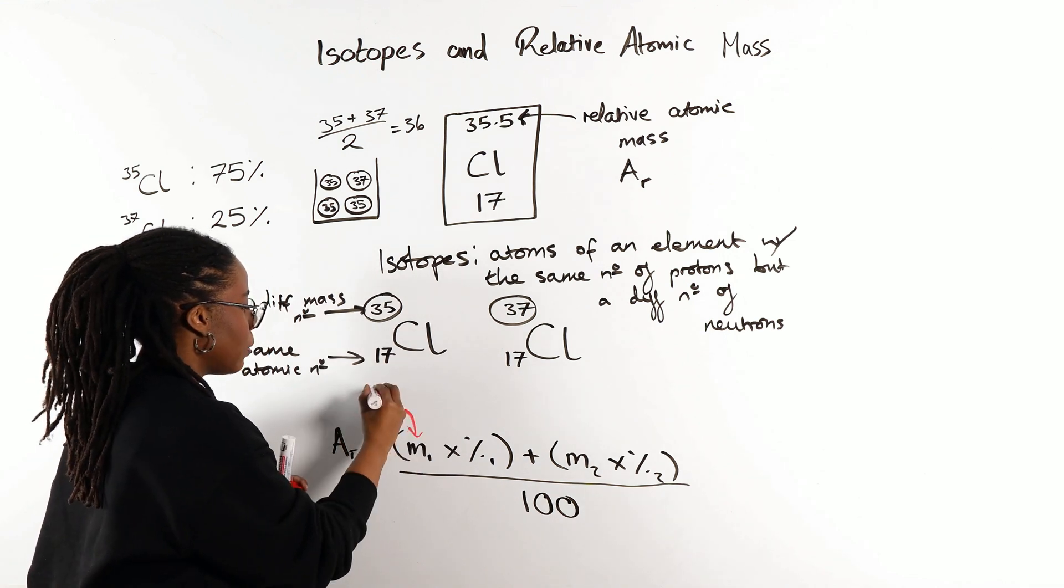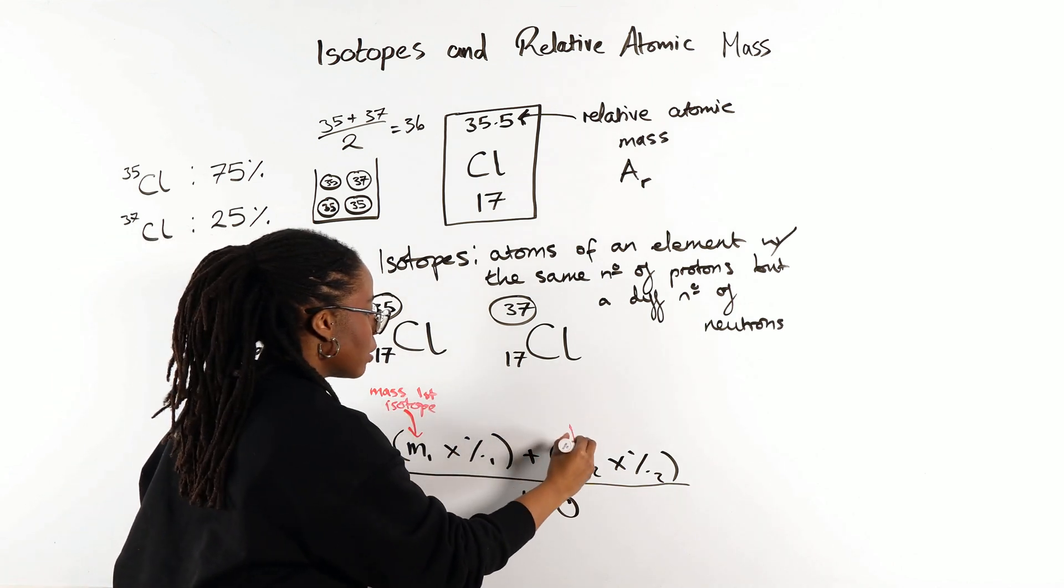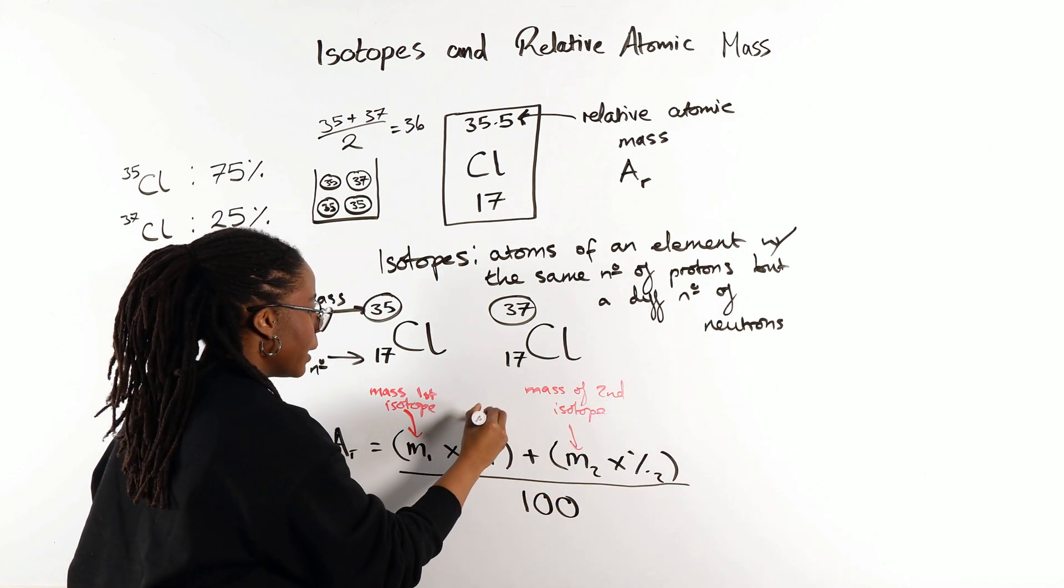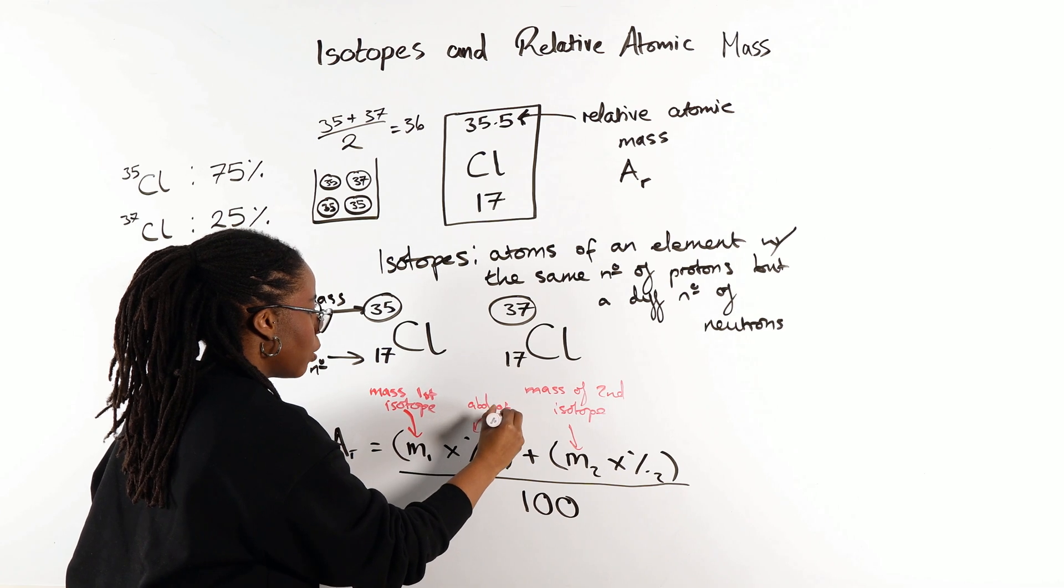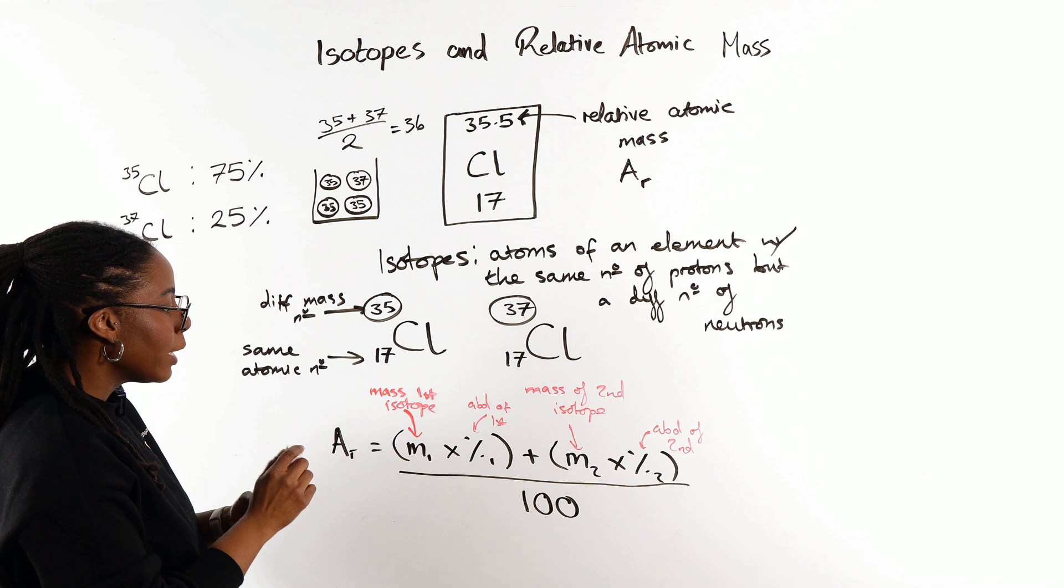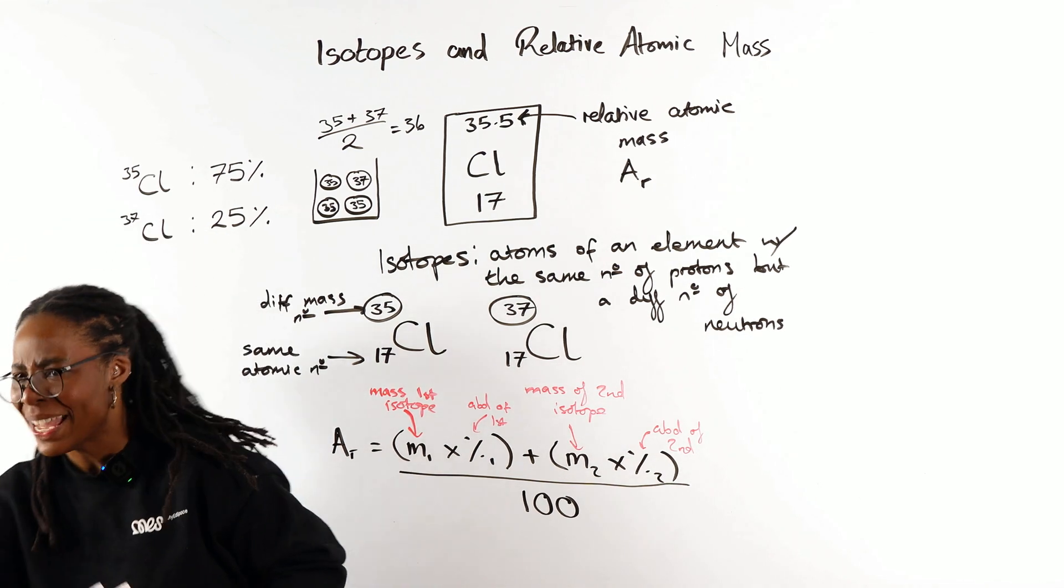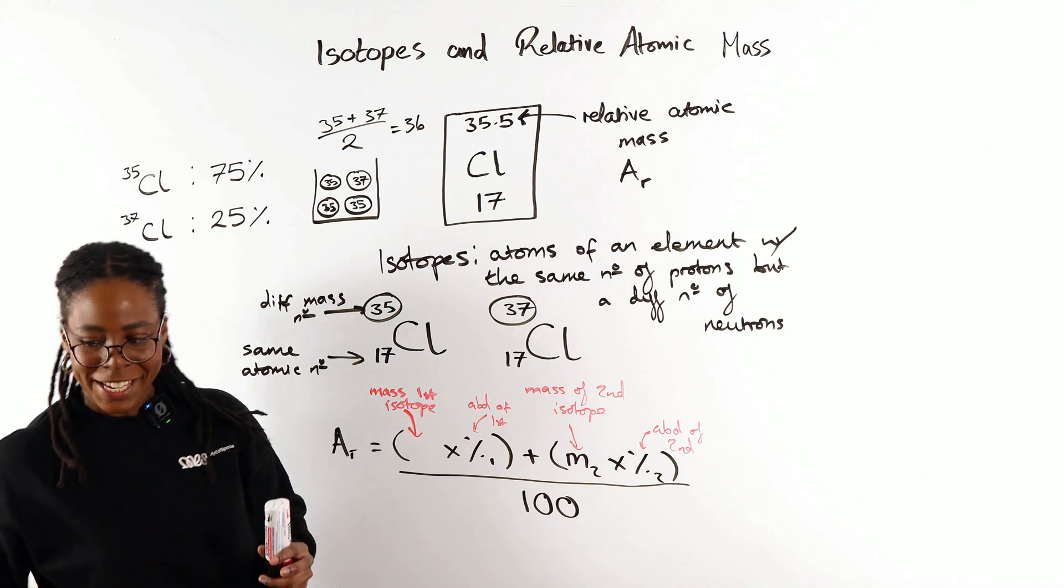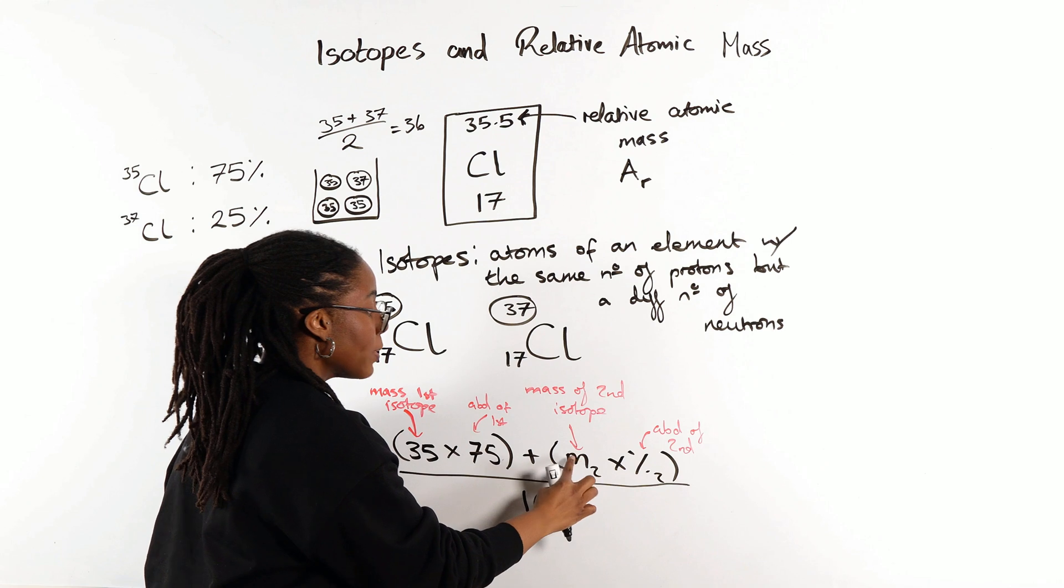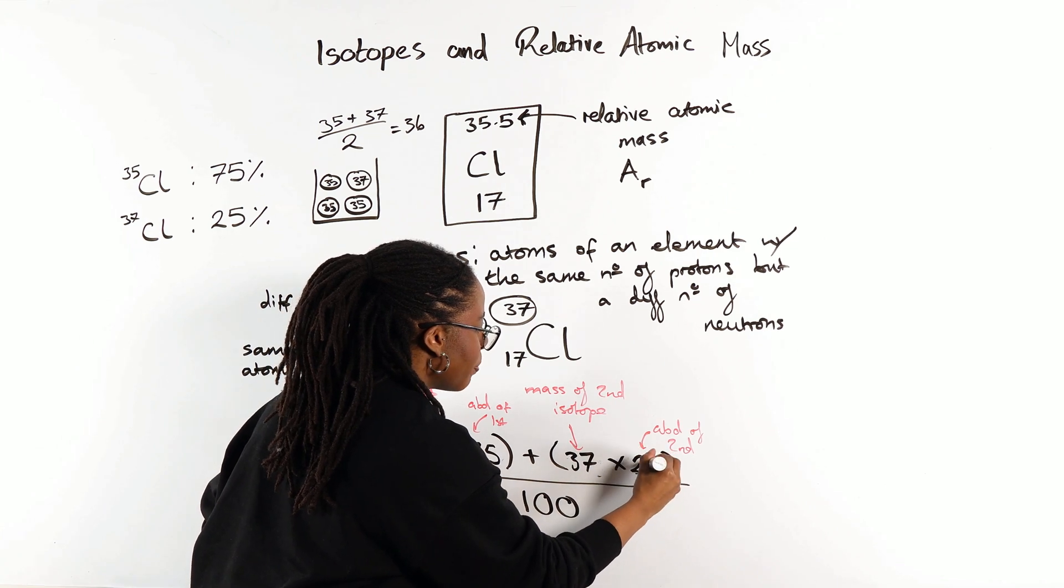Let's label this nicely so you're super clear what's going on. Mass of our first isotope, mass of our second, abundance of first isotope, abundance of second. So now plugging those numbers from our actual chlorine sample, we would get as our relative atomic mass, let's just put it directly into the expression, the mass of our first isotope is 35.